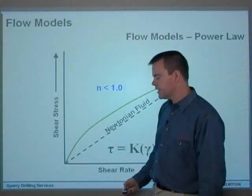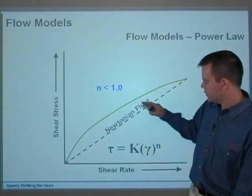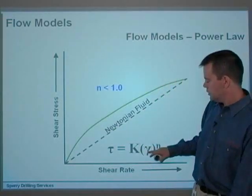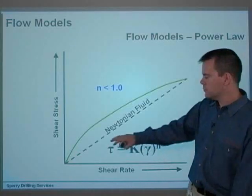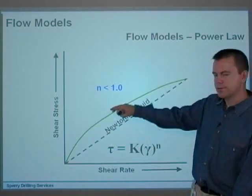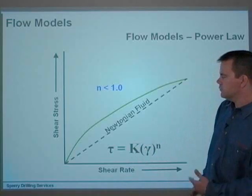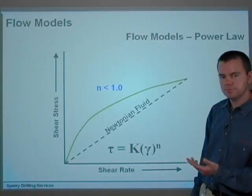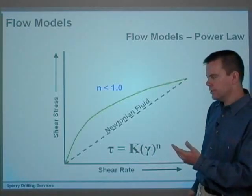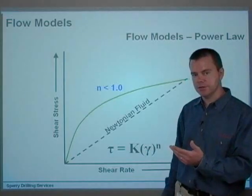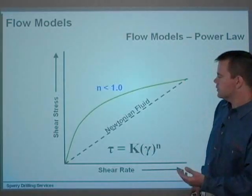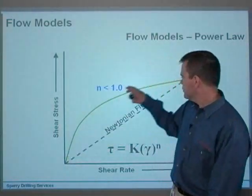As n becomes less than 1, because it's a power law relationship, γ to the power of something less than 1 makes this curve off the straight line. And the lower the value of n, the greater the curve.